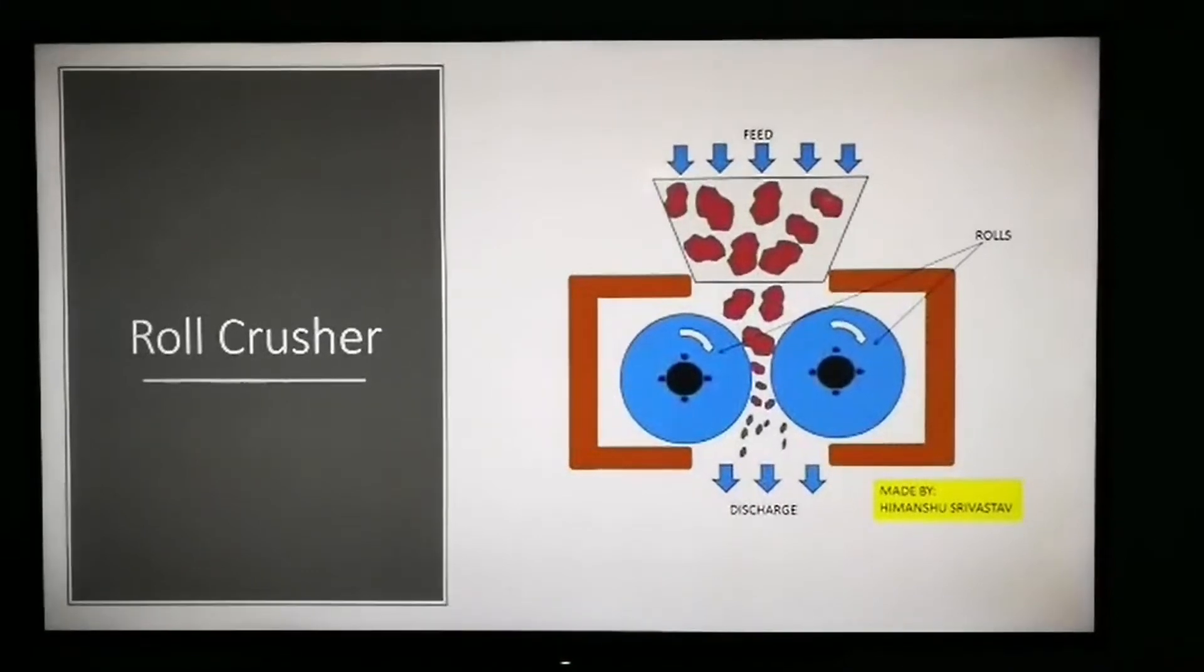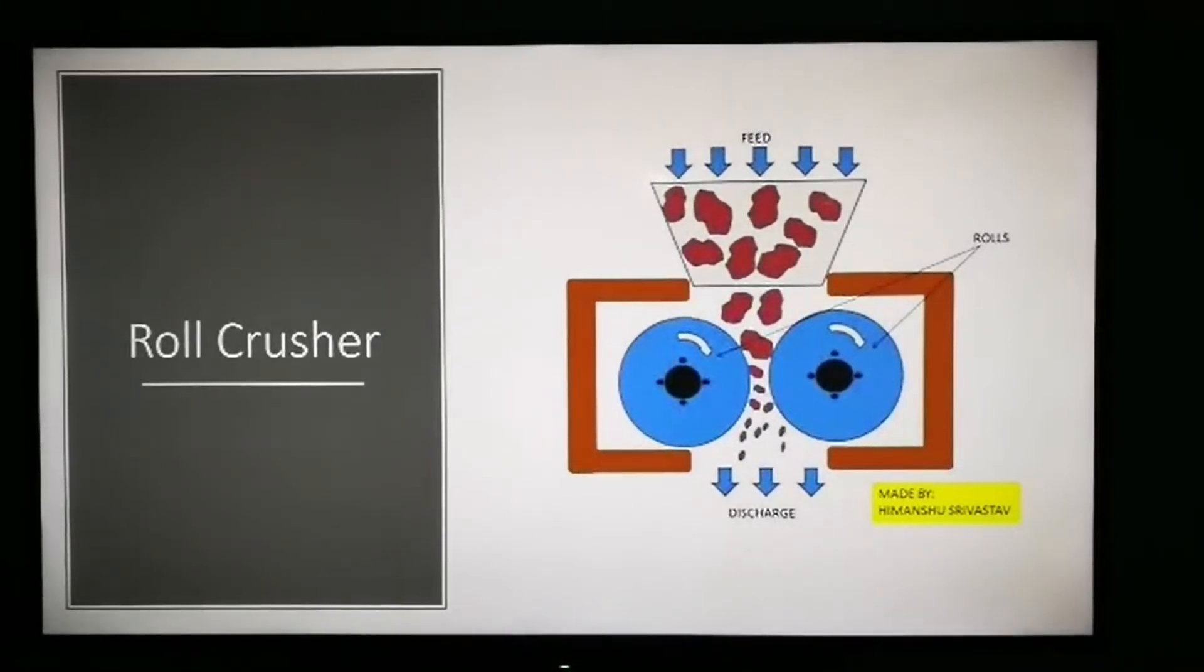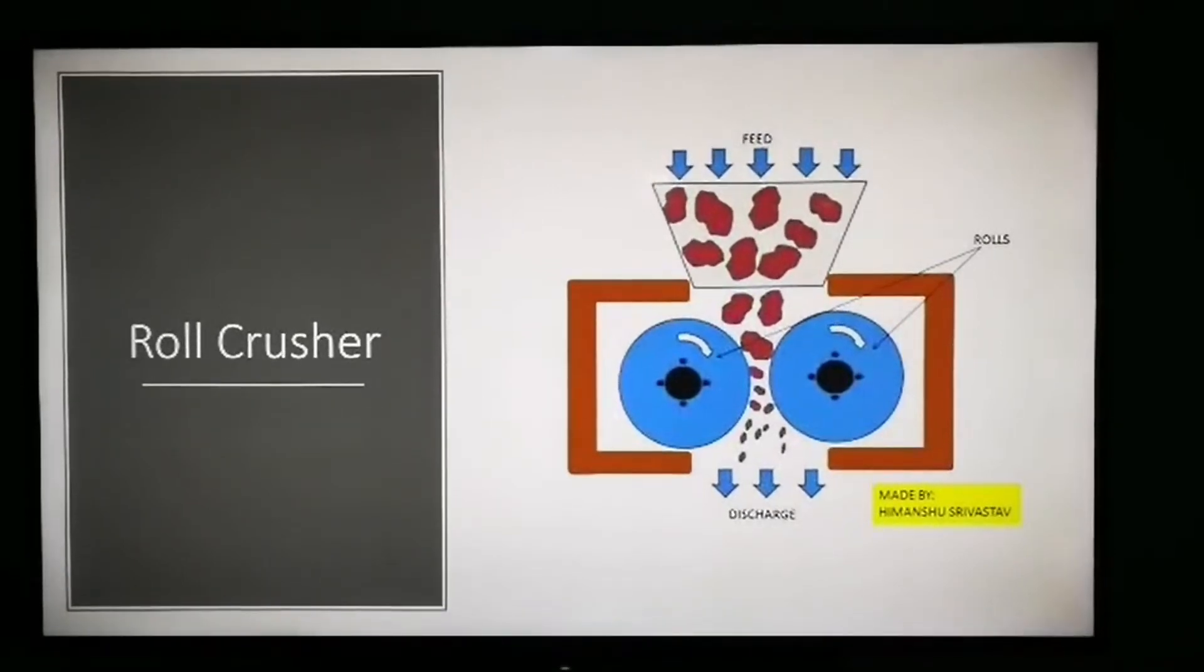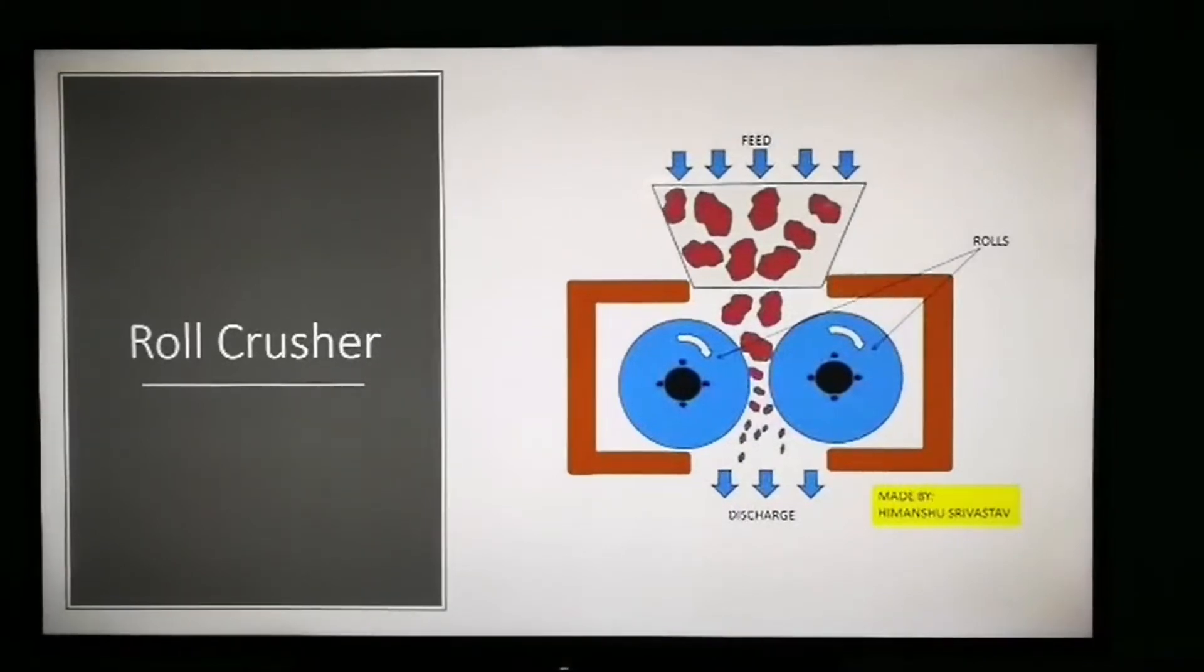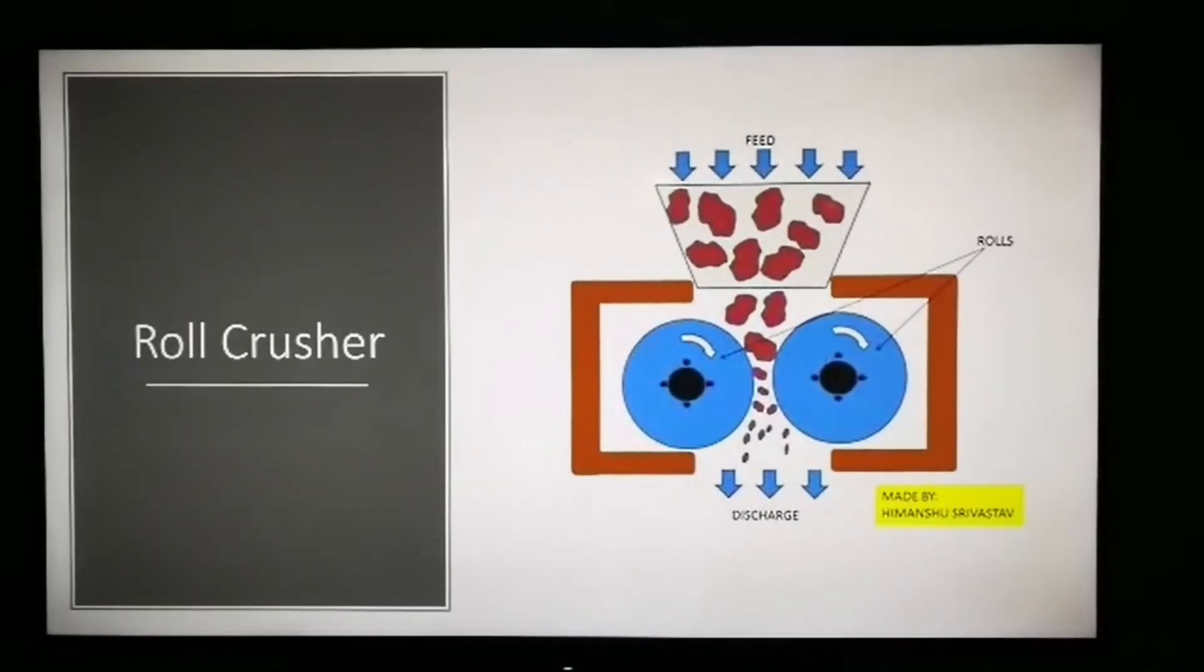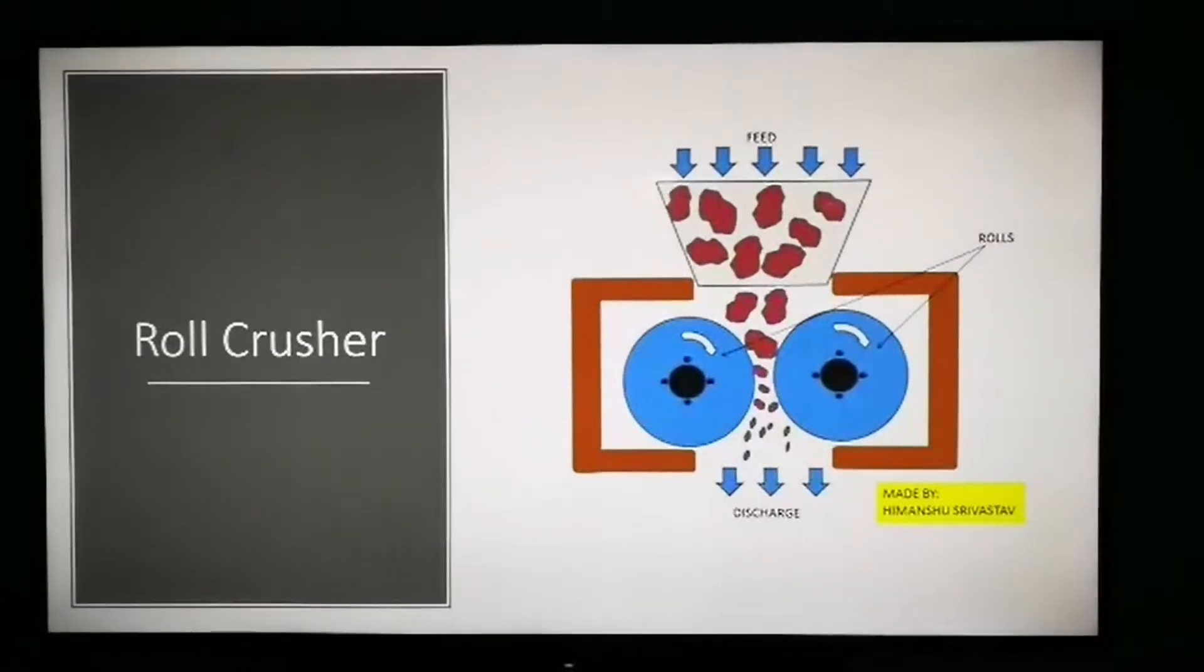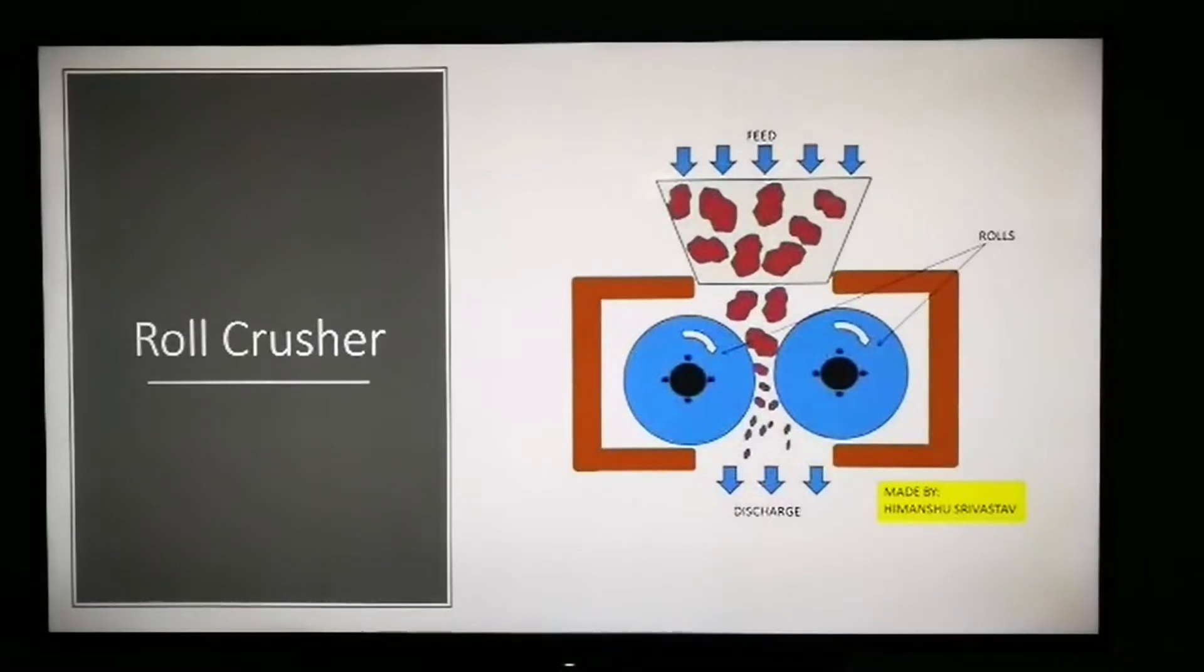Next, we can also use a roll crusher. A roll crusher should be installed to crush big pieces of scrap into smaller pieces. By crushing the bigger pieces of scrap into smaller pieces, separation of the scrap will become easier, thus enhancing the separation efficiency of the machine.